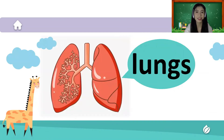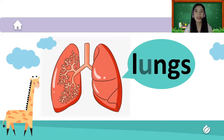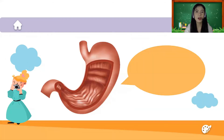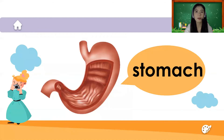Next we also have our lungs. We have two lungs and they are also located inside our body. Let's spell the word lungs: L-U-N-G-S. The lungs clean the air that we breathe — it is the air cleaner of the body.